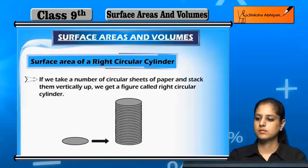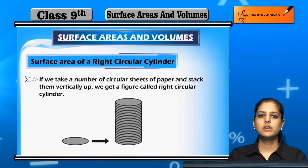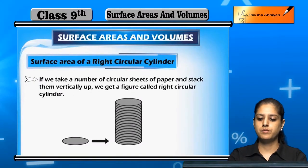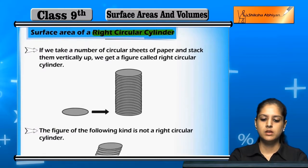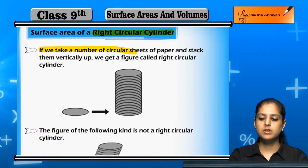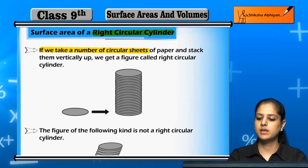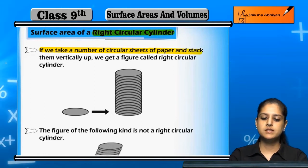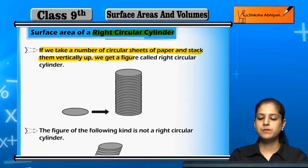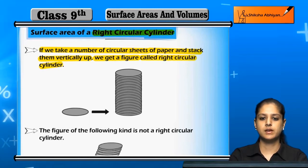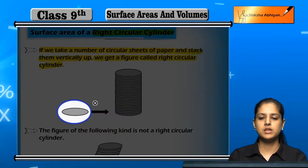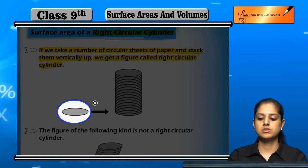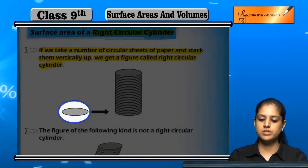The next topic is surface area of a right circular cylinder. If we take a number of circular sheets of paper and stack them vertically up, we get a figure called a right circular cylinder. So if we have a circular sheet of this dimension and we have many circular sheets of paper and stack them, this is called a right circular cylinder.